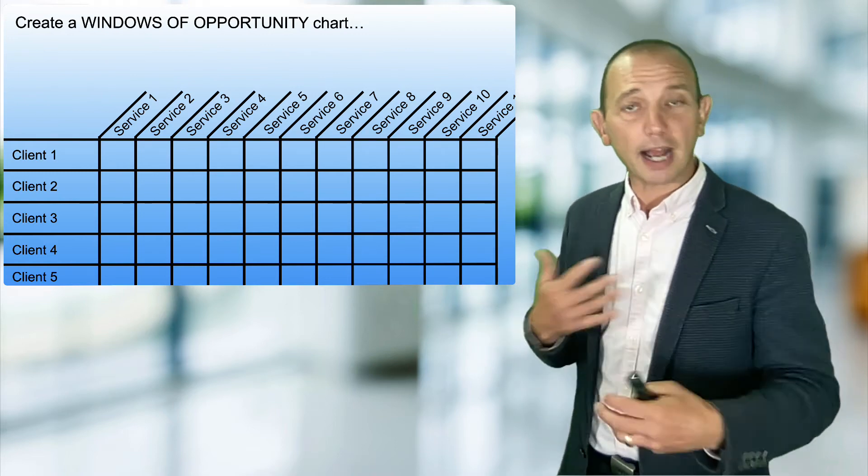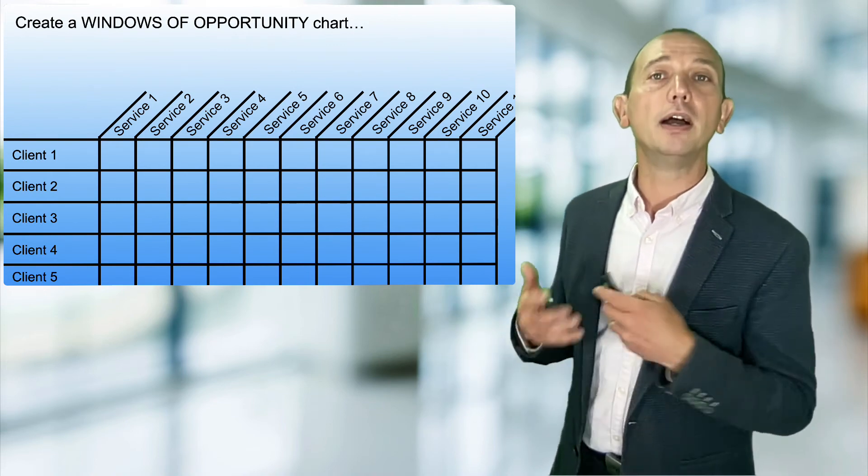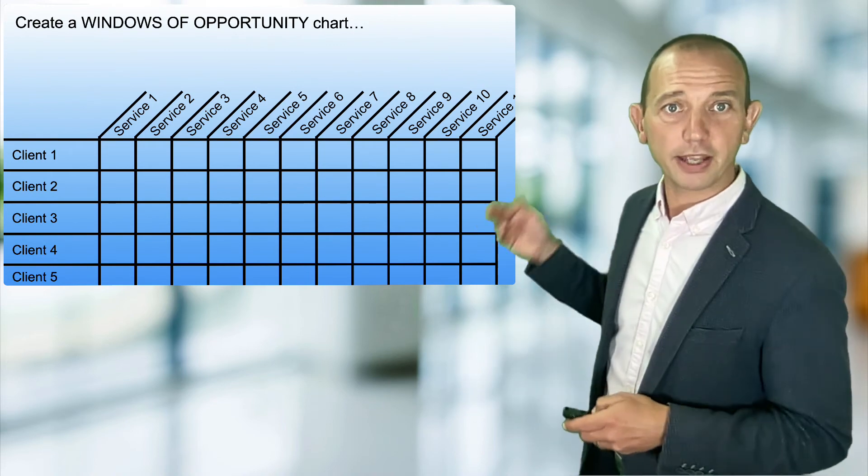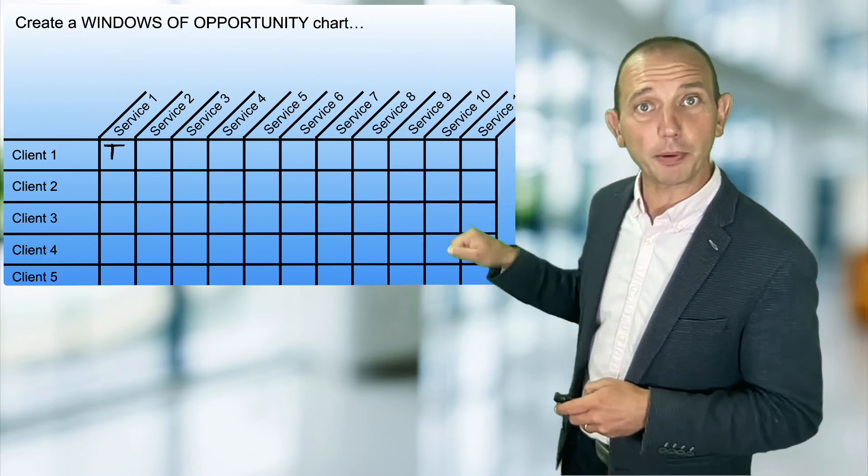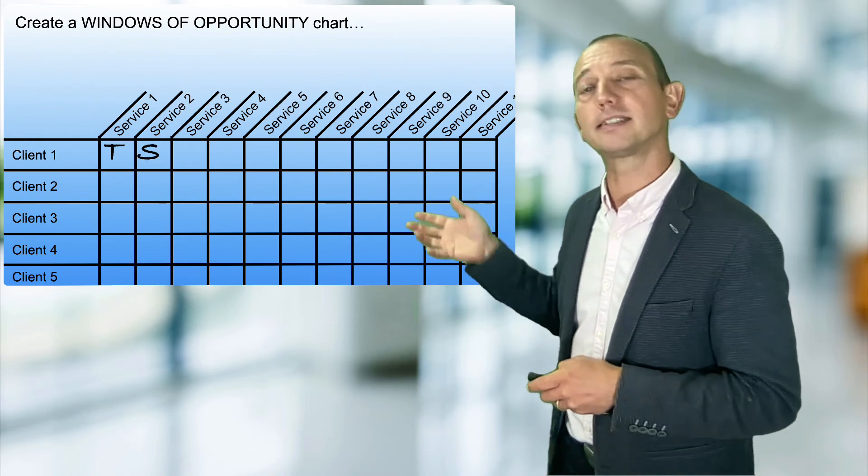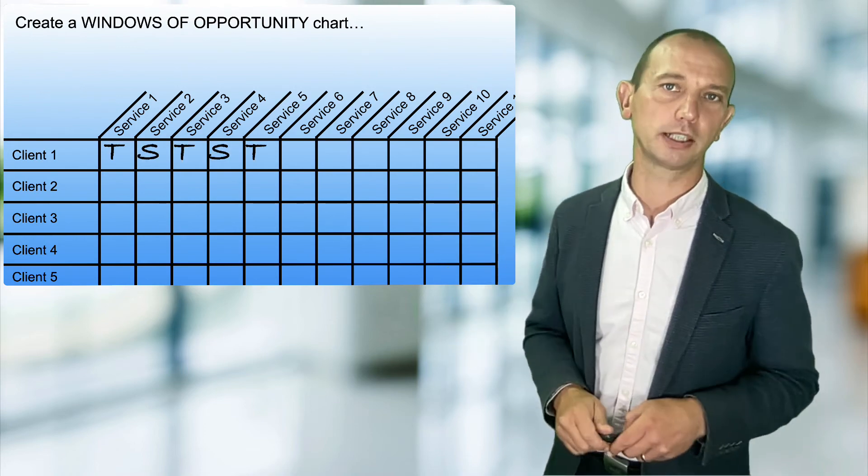And if they do, then great—have that conversation, and maybe that's something that you can then sell to them. If not, then you've told them. In terms of marking on here, all you've got to do is mark it with a 'T' to say I've told them about it but maybe they didn't buy right now, or an 'S'—I've sold it to them, and you can continue that process through.